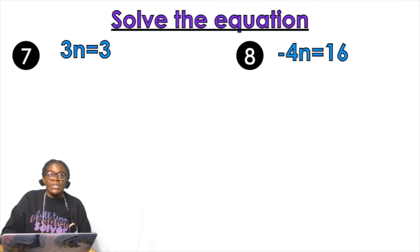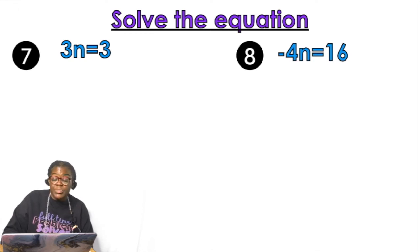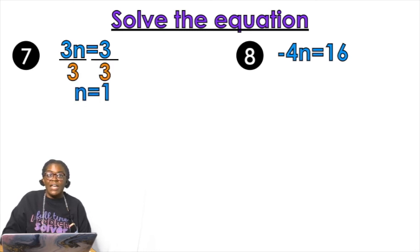Okay. So now we have one step equations that involve multiplication. How do we get rid of multiplication? Division. Yes. Smarticle particles. So divide by three, divide by three, n equals one.